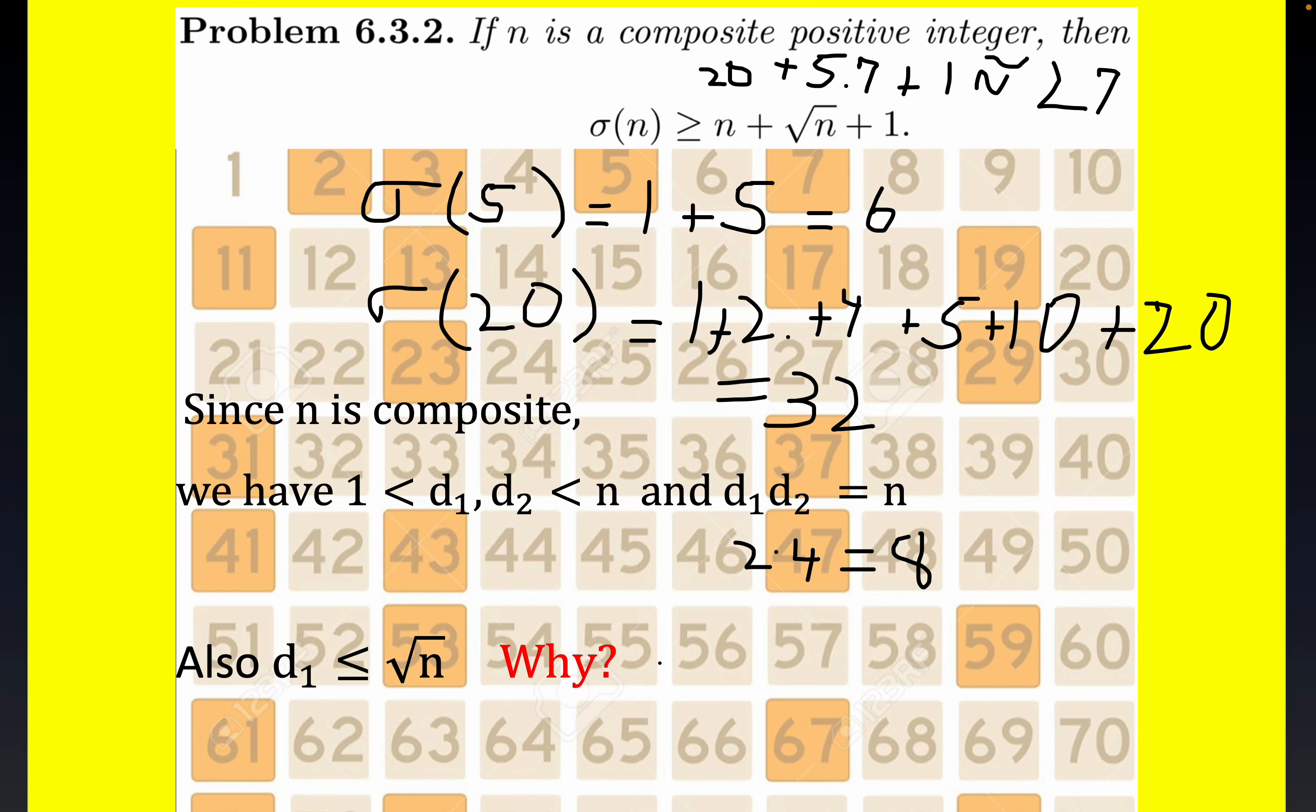Now let's take a look at the, this is kind of the crux of the proof, and it's sort of a well-known proof of number theory. One of the divisors has to be less than or equal to the square root of n, because consider the alternative, which would be d1, both d1 and d2. If d1 and d2 were both strictly greater than root n, which is the opposite of this condition right here.